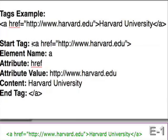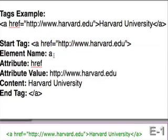So let's break it down. The start tag is the entirety of the first part of the tag before the content — the A, href, http, et cetera. The element name, in this case, is A — this is an anchor tag. The attribute is href, or the HTTP reference. The attribute value is http://www.harvard.edu. The content is Harvard University. And the end tag is the slash A encapsulated in the angle brackets.